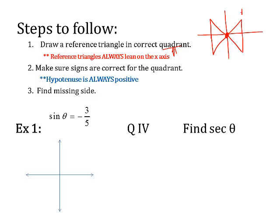Quadrant one looks like this, quadrant two is here, three is here, four is here. A couple things to know: they always hug the x-axis — always lean on the x, never to the y. Always on the x. And theta is always by the origin, so it's in that corner. Theta is always going to be at the origin when you draw your triangle.